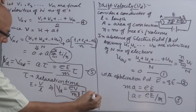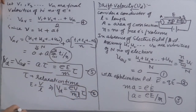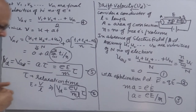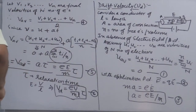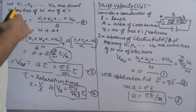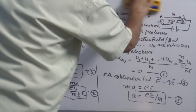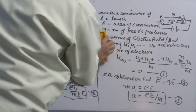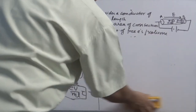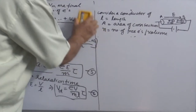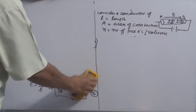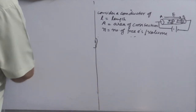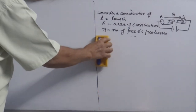Remember here, V is the potential difference and L is the length of the conductor. After this, we are going to develop a relation between current and drift velocity. I am keeping all these variables the same — that is why I am not erasing them. We are going to derive a relation between current and drift velocity.